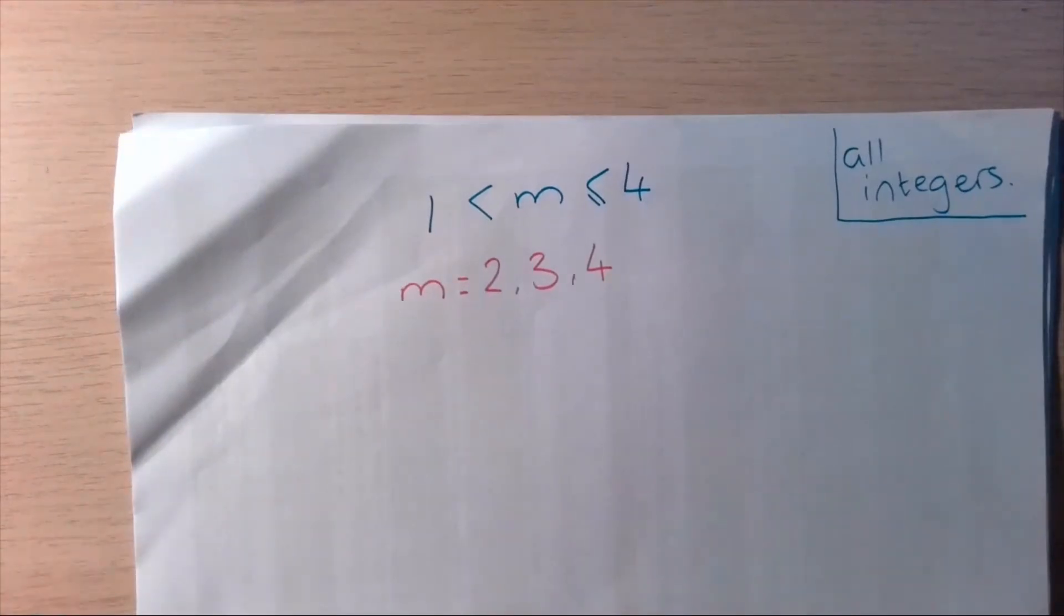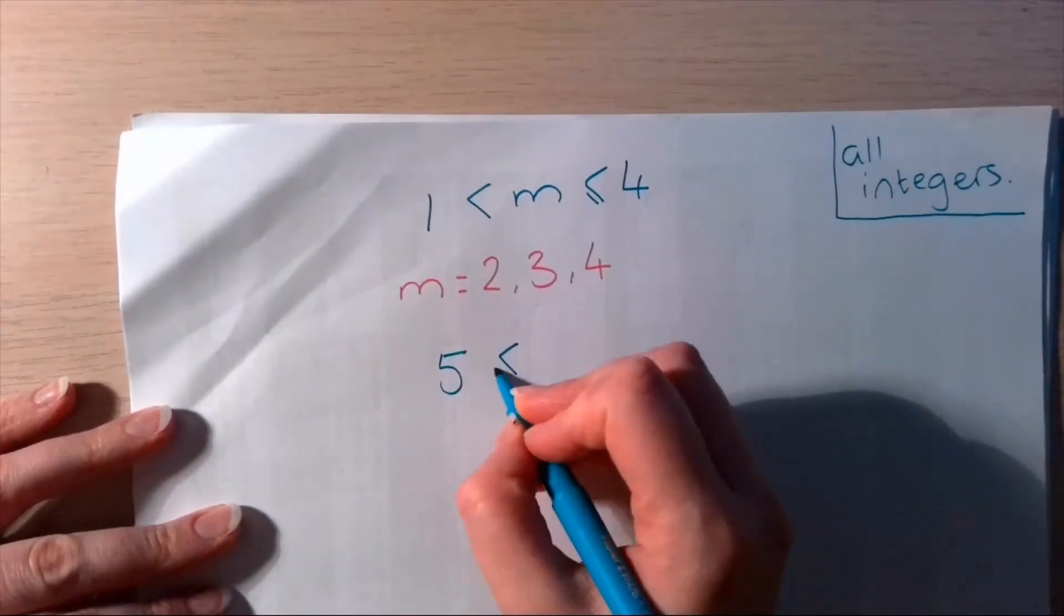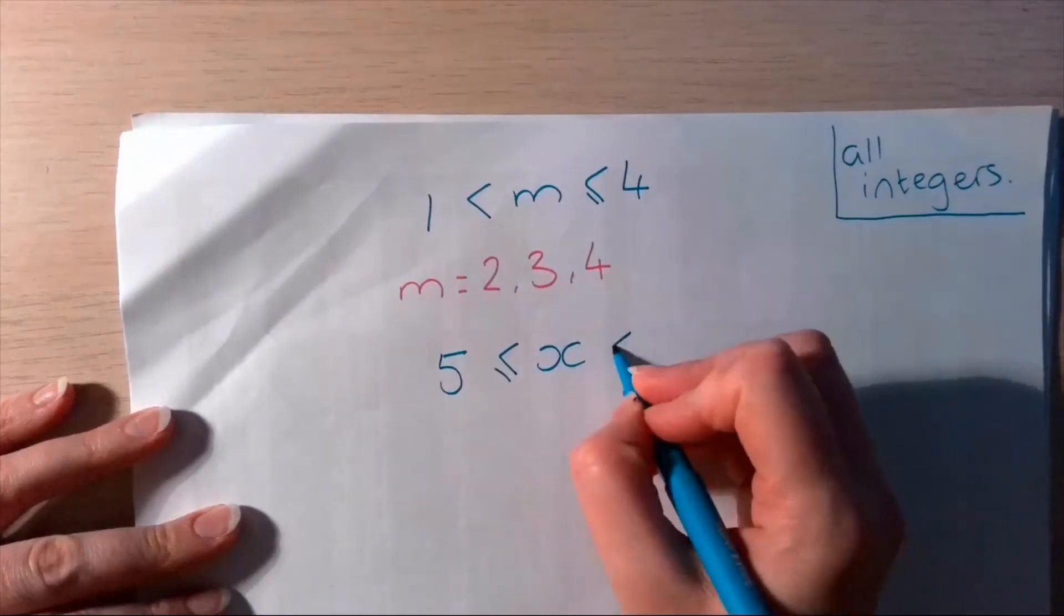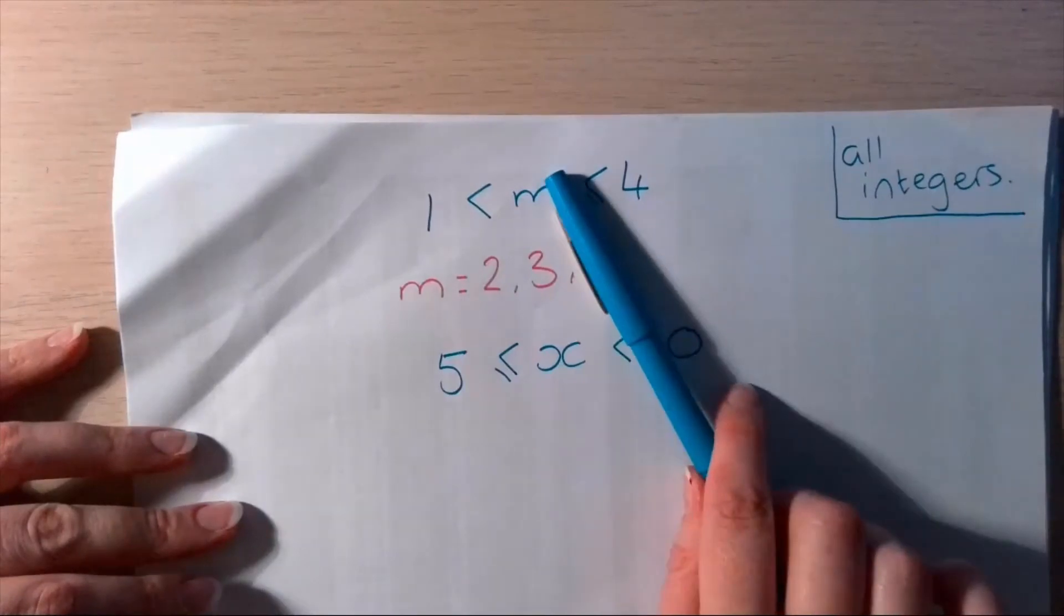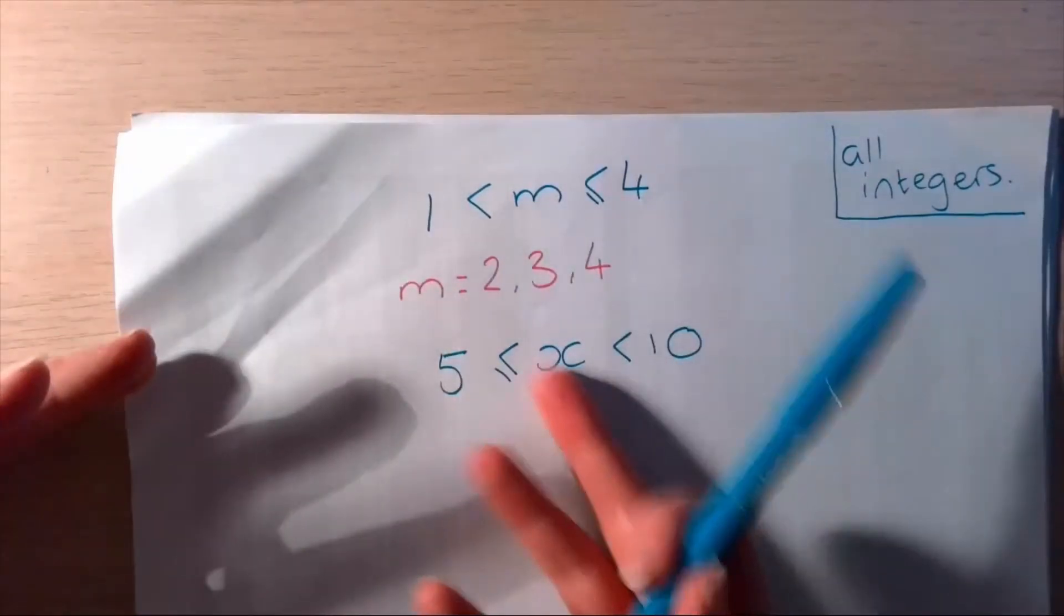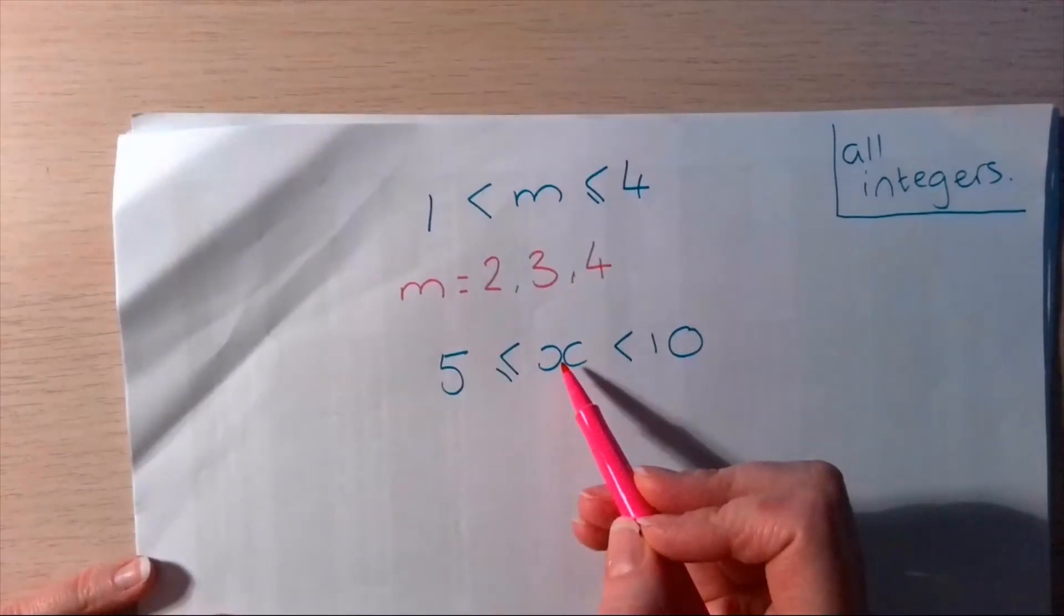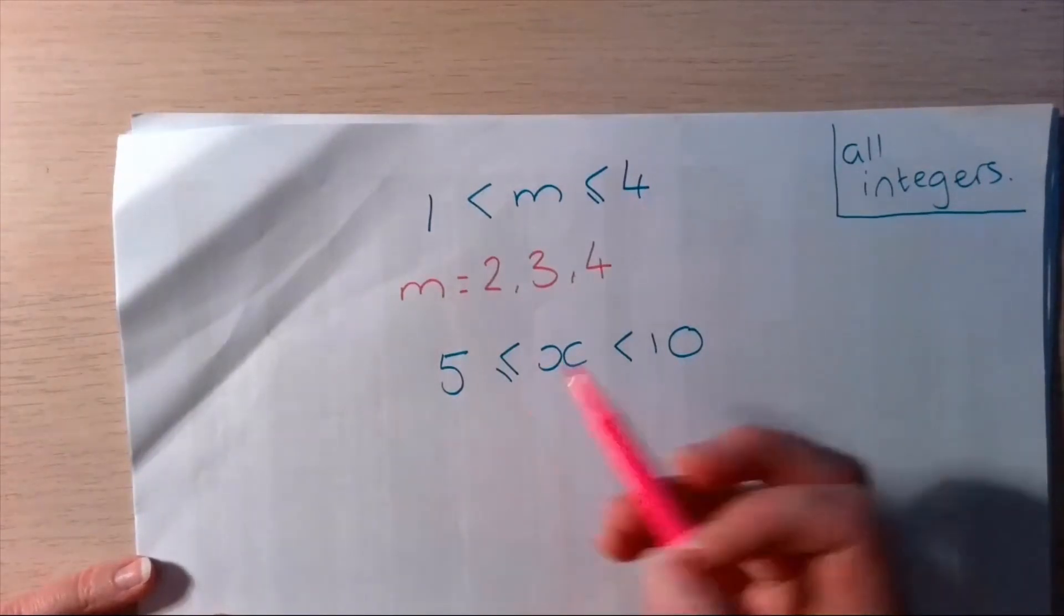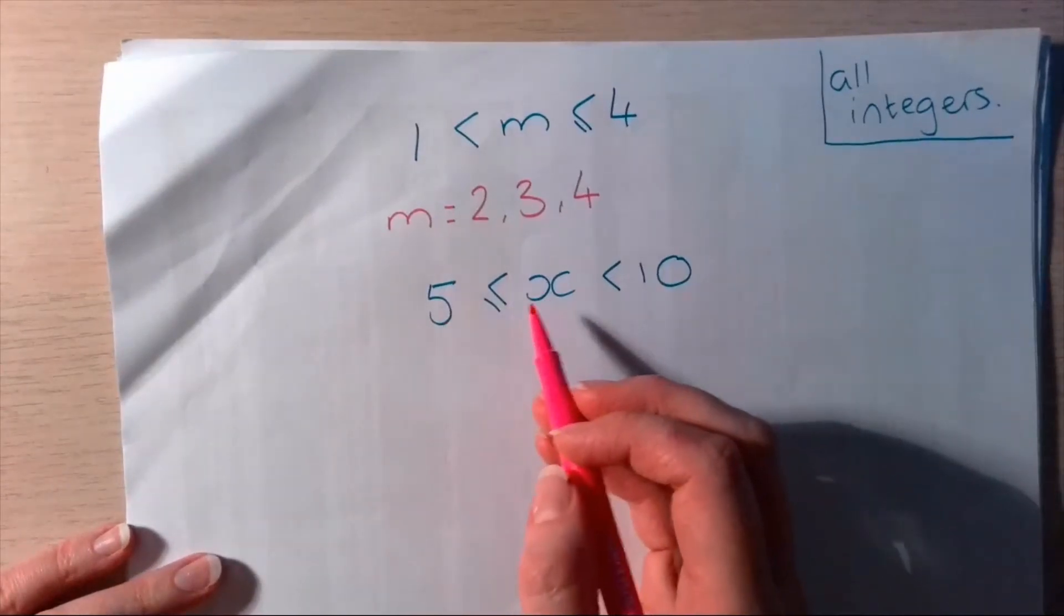Okay, let's try another one. So, this time we've got 5 is less than or equal to x, which is less than 10. And I've just used an x this time. I've used an m. You could use any variable. I'm just using different variables, so you can just see these are just representing a number. I'm going to use a different letter each time. Right then.